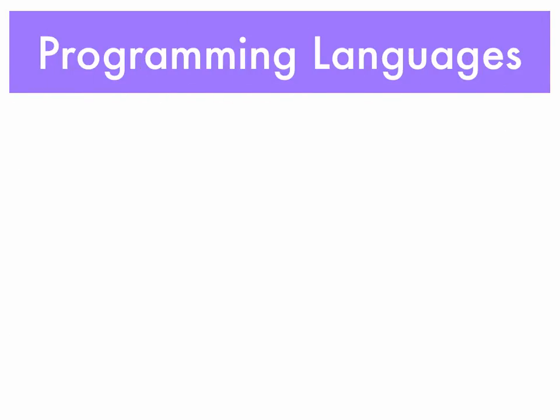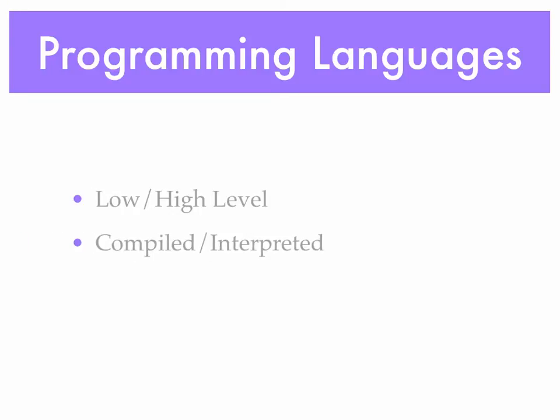Programming languages come in a lot of shapes and sizes. They can be low or high-level. A low-level language is difficult to look at — it's not very English-like — whereas a high-level language is. They can be compiled or interpreted. Think of somebody giving a speech in a language you don't understand. With the compiled model, the entire speech would be given, and then someone would translate the whole thing to you. With interpretation, a line of the speech would be given and translated, then another line given and translated. That's interpretation.